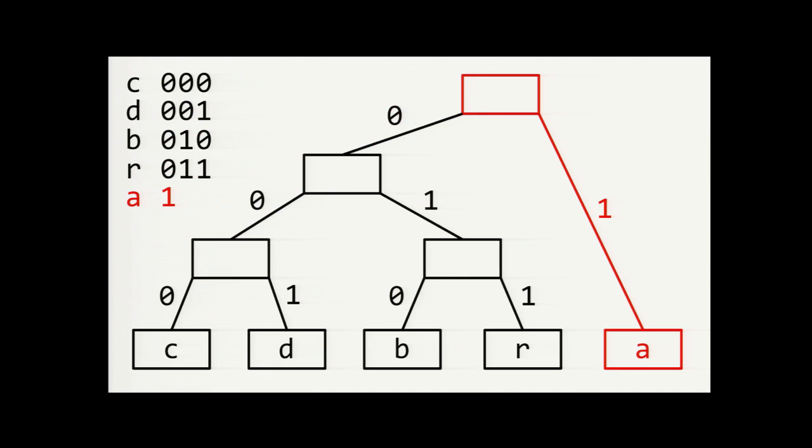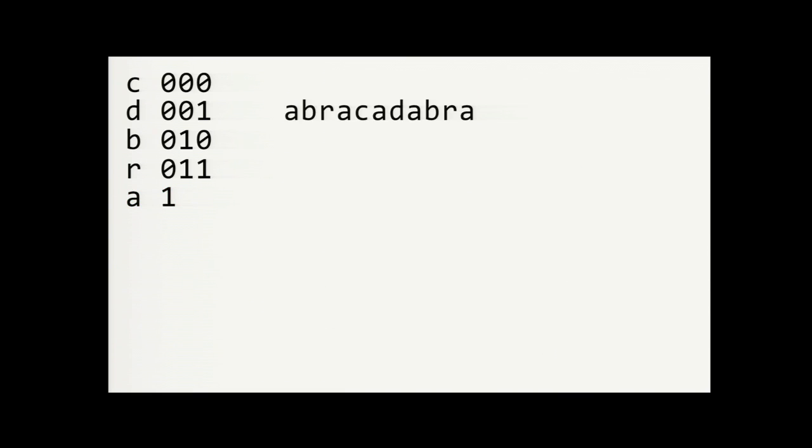Then we use these codes to encode the input. Code for A is one. B, zero, one, zero. R, zero, one, one. And so on until we've encoded the entire string.